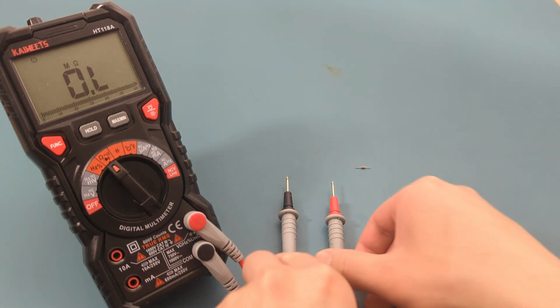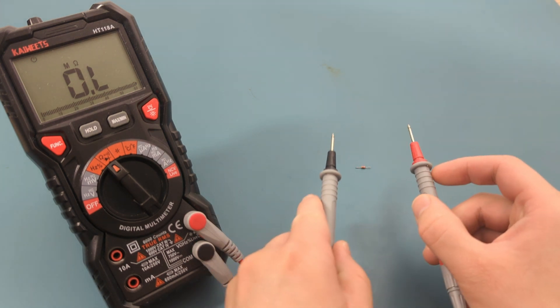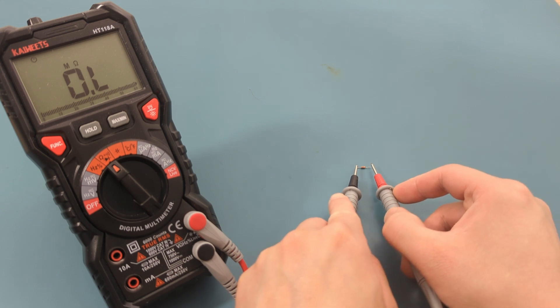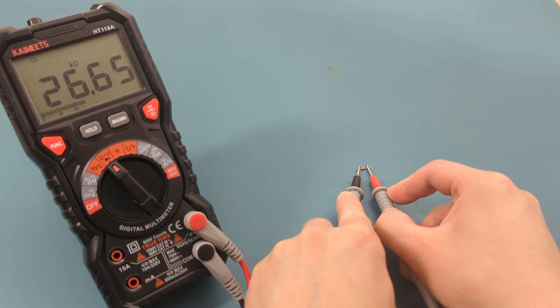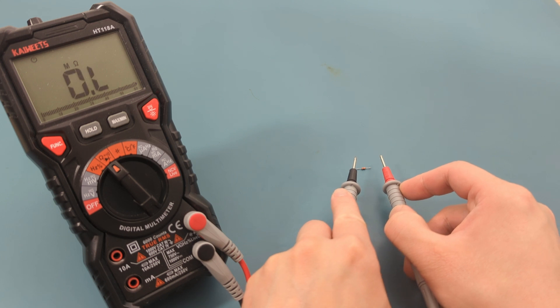Touch the probe leads to each end of the resistor wires. Resistors aren't polarized, so you can place the probe leads on either end of the resistor wires without worrying about direction. This is the four band resistor, which we determined should have a value of around 27,000 ohms. The reading shows around 26,000 ohms, so our calculation was correct.